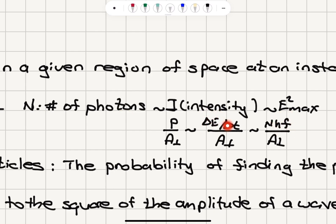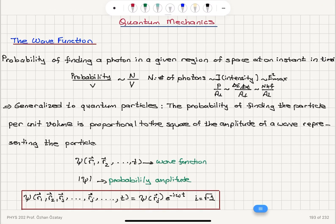Therefore, the power per perpendicular area is proportional to the number of photons, because the energy carried by these photons will be NHF. We can see that the maximum of the amplitude squared — where the amplitude refers to the amplitude of the electric field representing the electromagnetic wave associated with the photon — can be generalized to quantum particles.